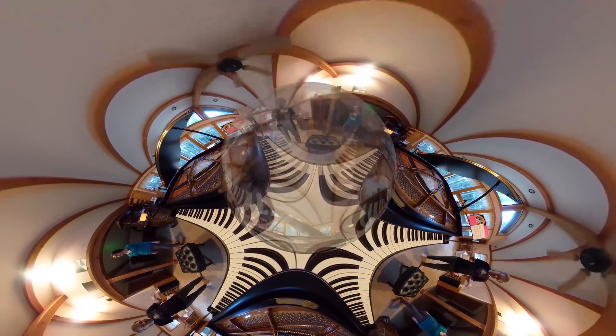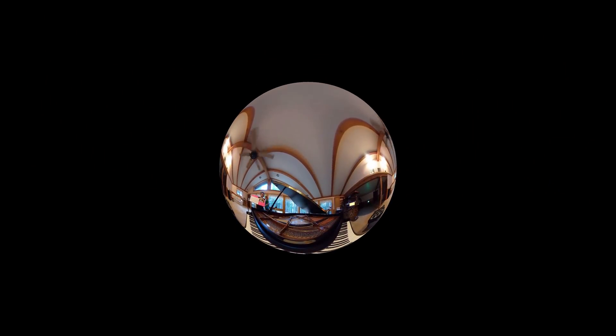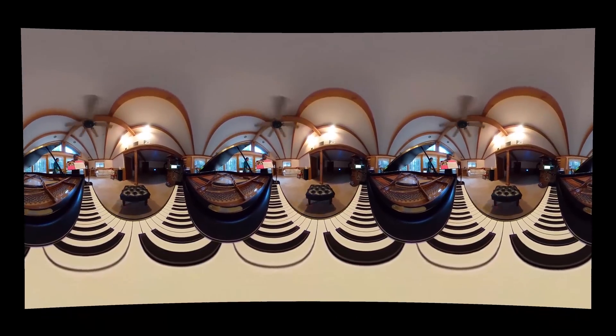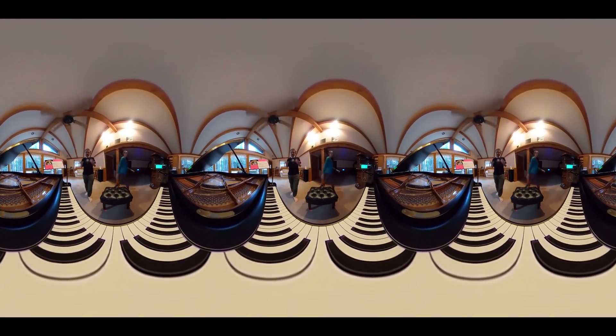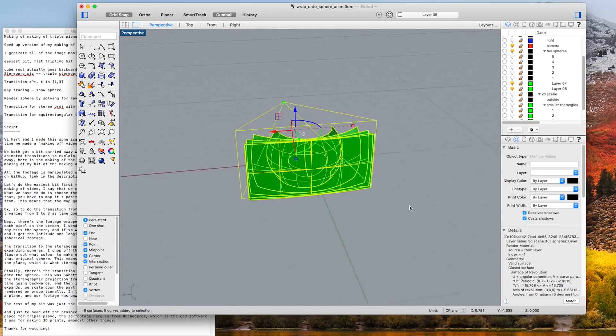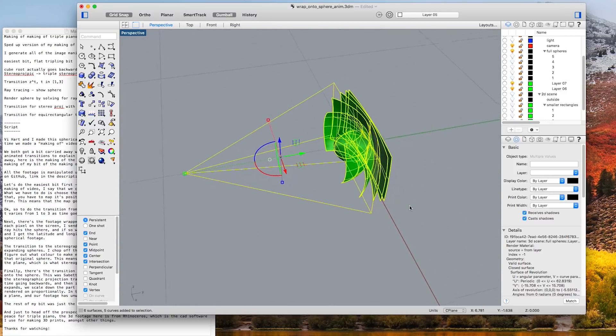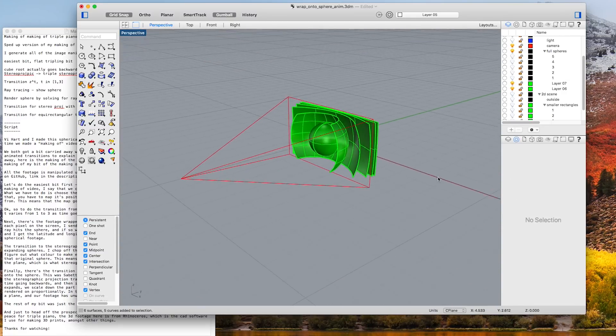The rest of my bit was just the same transitions going backwards with tripled footage so that's more or less everything. But just to head off the prospect of a video on the making of the making of the making of piece for triple piano, the 3D footage in this video is from Rhinoceros which is the CAD software I use for making 3D prints amongst other things. Thanks for watching!